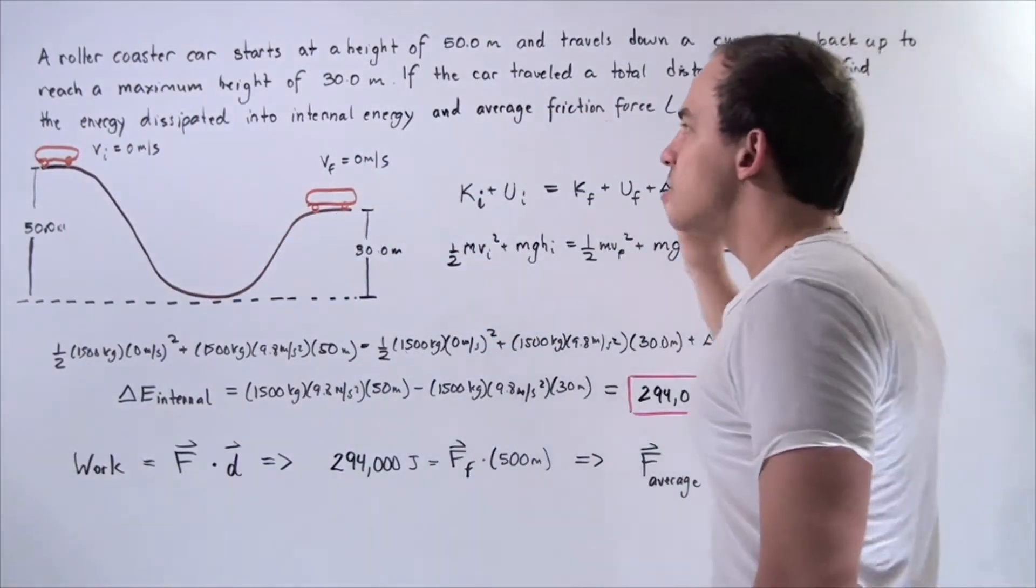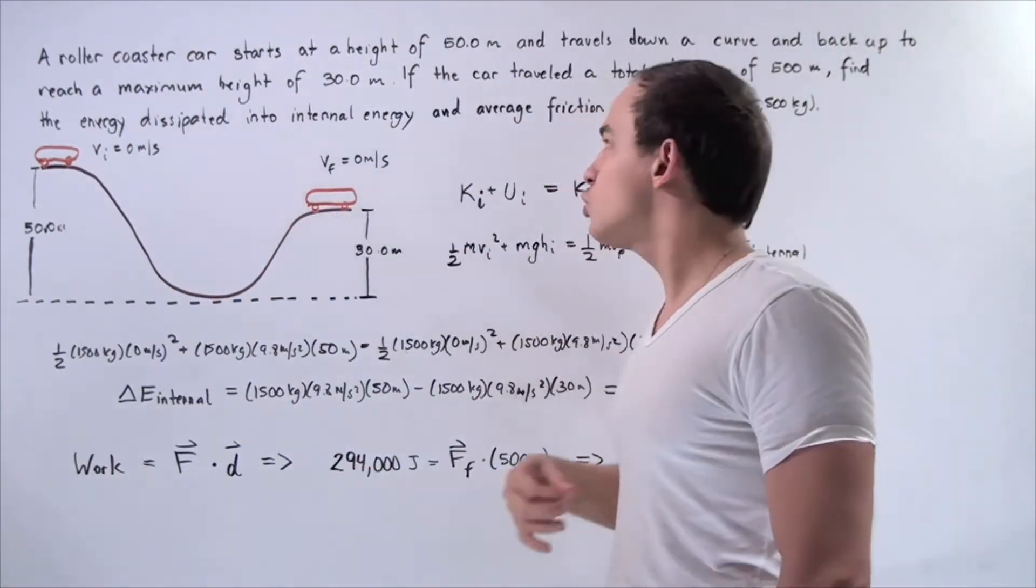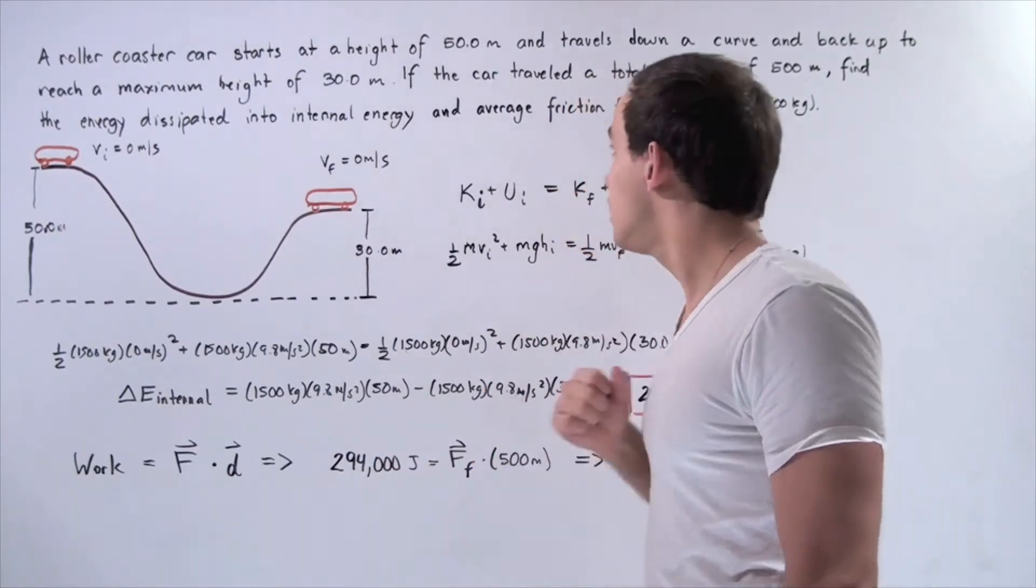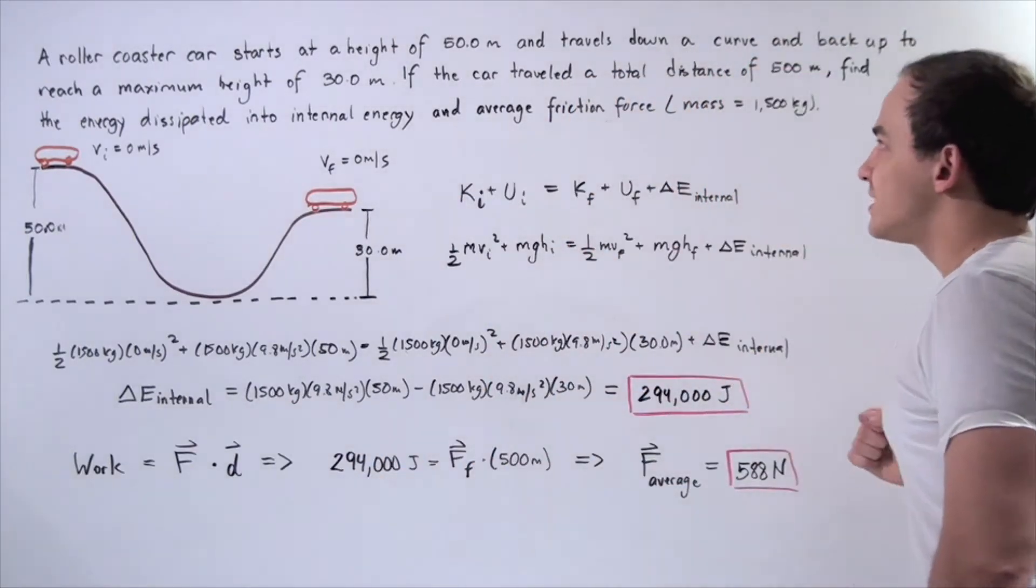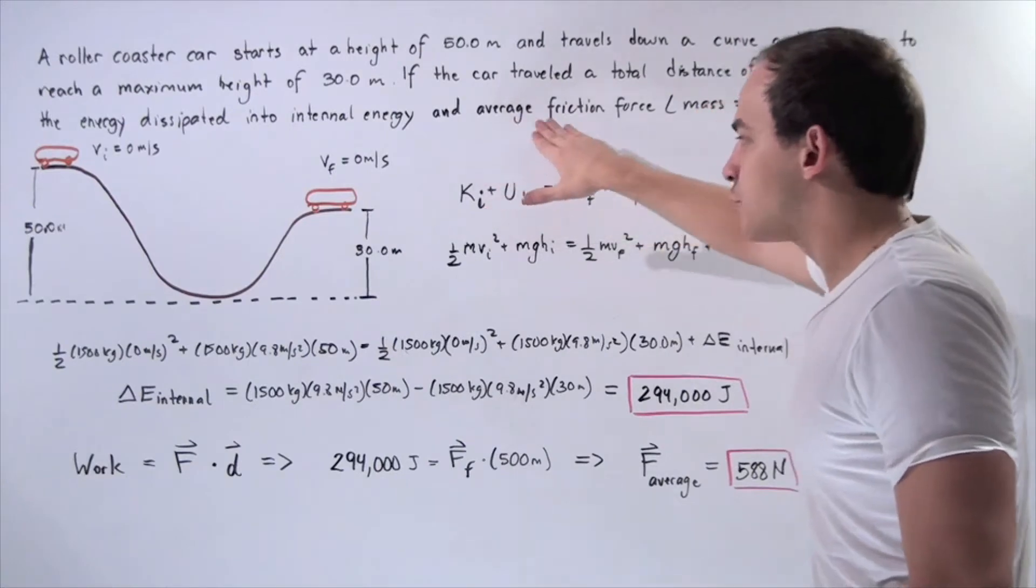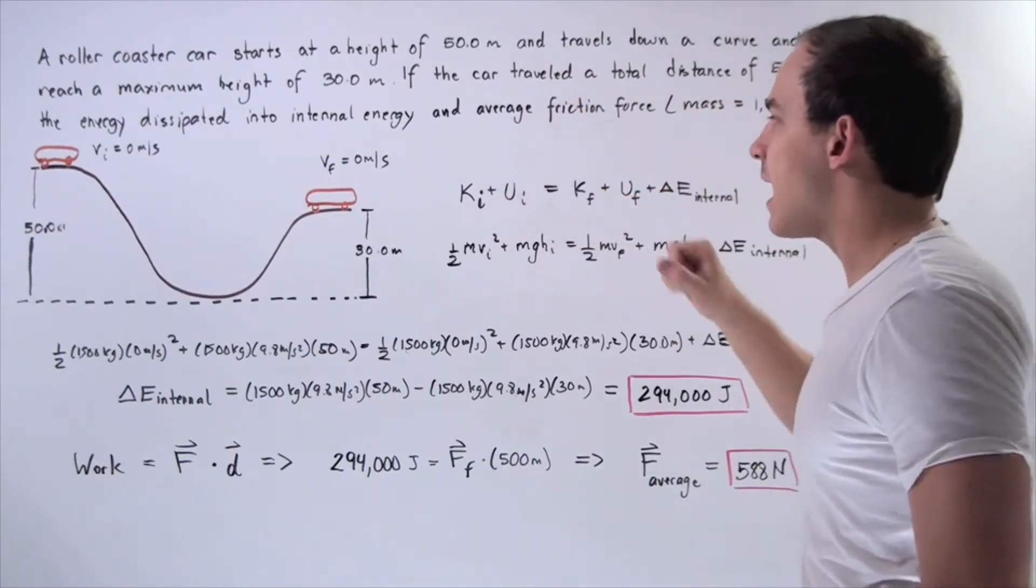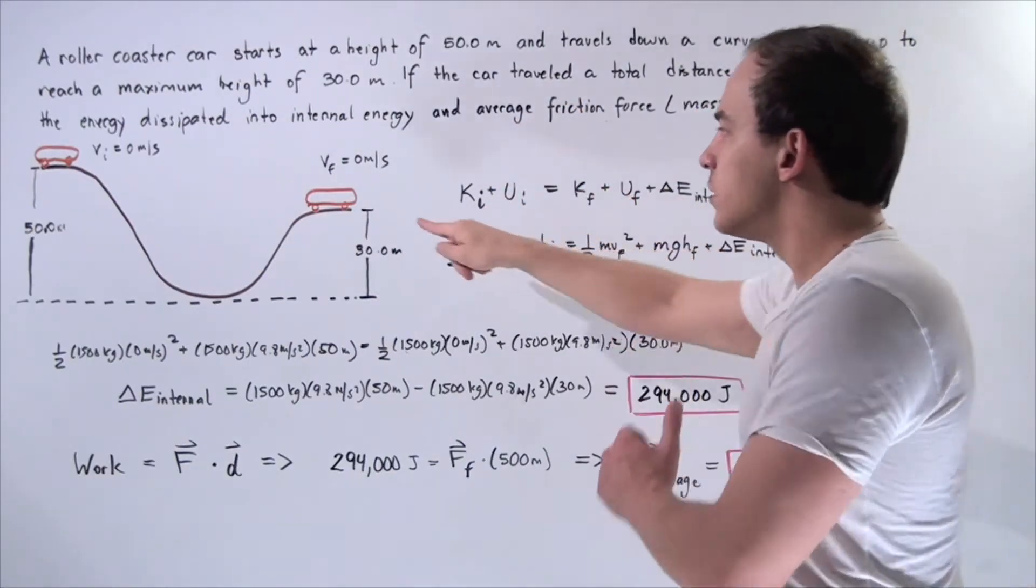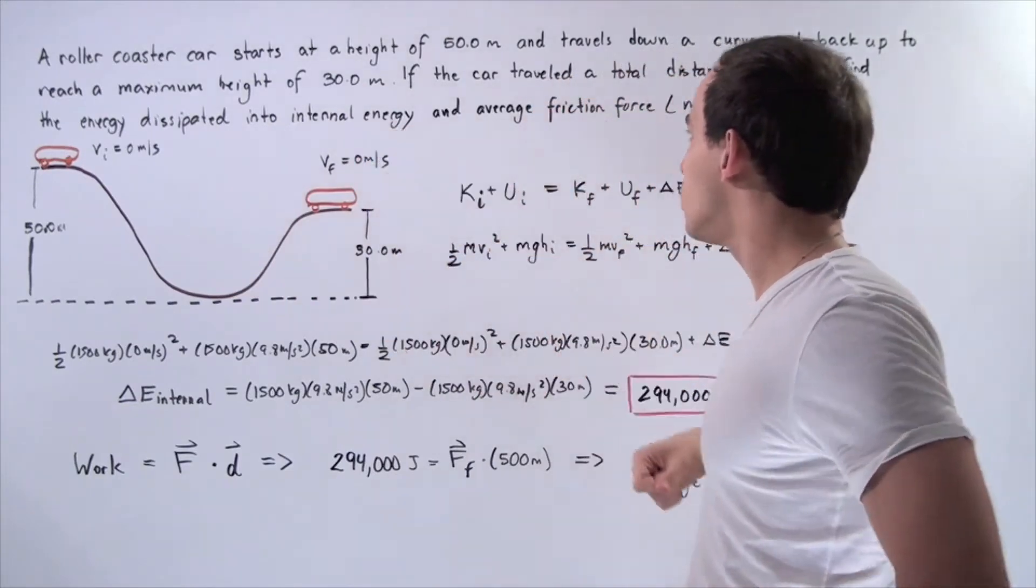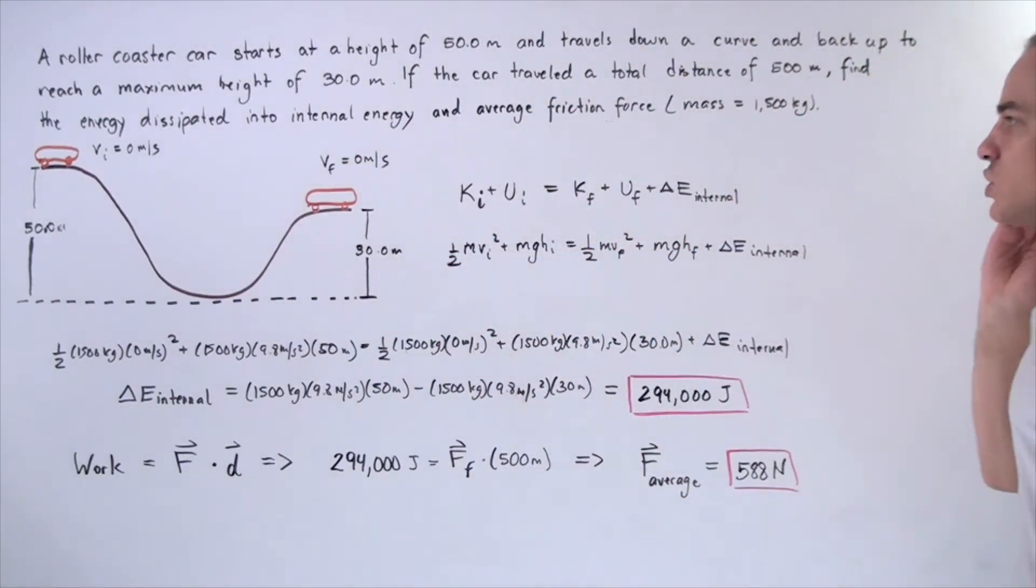We want to find the energy dissipated into internal energy, into thermal energy. And we also want to calculate the average frictional force acting on our car between the coaster surface and the roller coaster car. Let's assume the mass of the car is 1,500 kilograms.